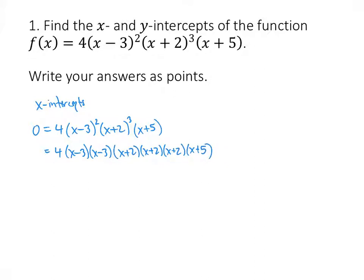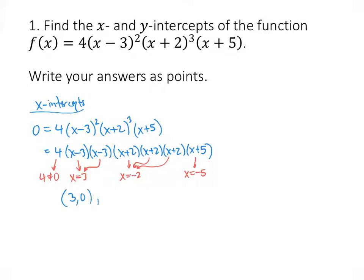One of these factors has to equal 0. 4 can't be 0, so that doesn't give us any solutions. x minus 3 gives us x equals 3, and repeated factors don't give us additional solutions — once a factor appears, we get one solution. x plus 2 gives us x equals negative 2, and x plus 5 gives us x equals negative 5. So we have three x-intercepts: (3, 0), (−2, 0), and (−5, 0).